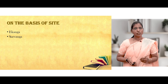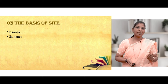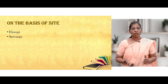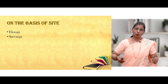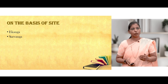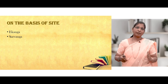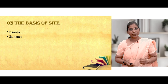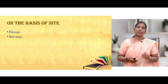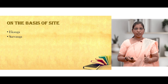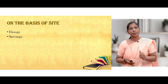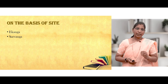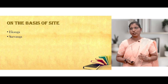On the basis of site, Ekanga and Sarvanga Sweda are the two types. Pijichil, Shashishali Pinda Sweda, and Patra Pinda Sweda for the whole body come under Sarvanga Sweda, while Janu Vasti or Patra Pinda for the Janu Pradesh, or Lavan Pinda Sweda for the ankle joint, is called Ekanga Sweda.